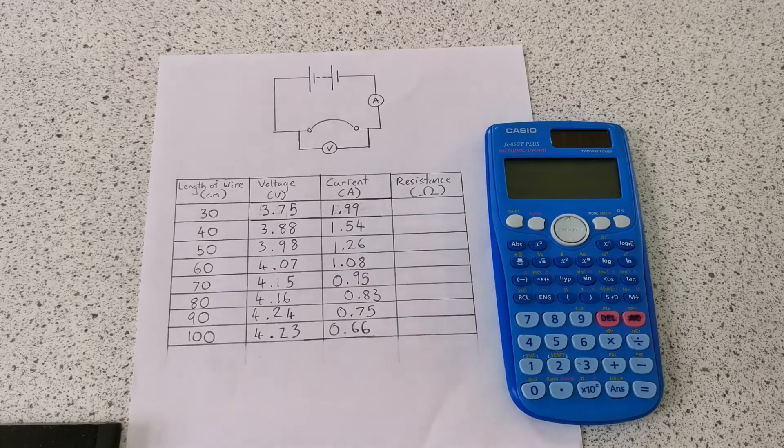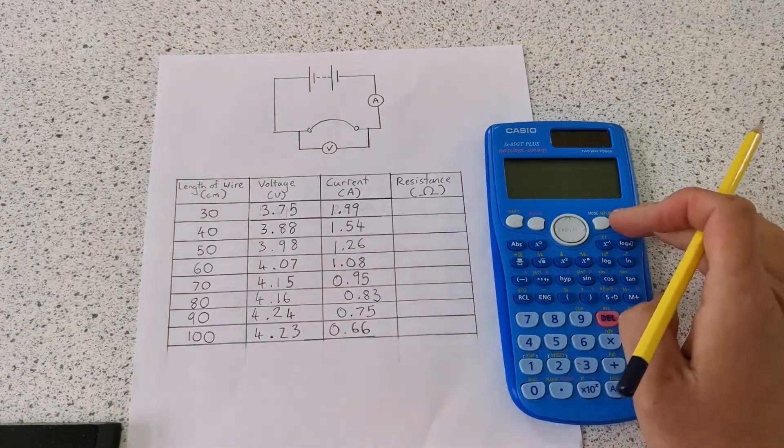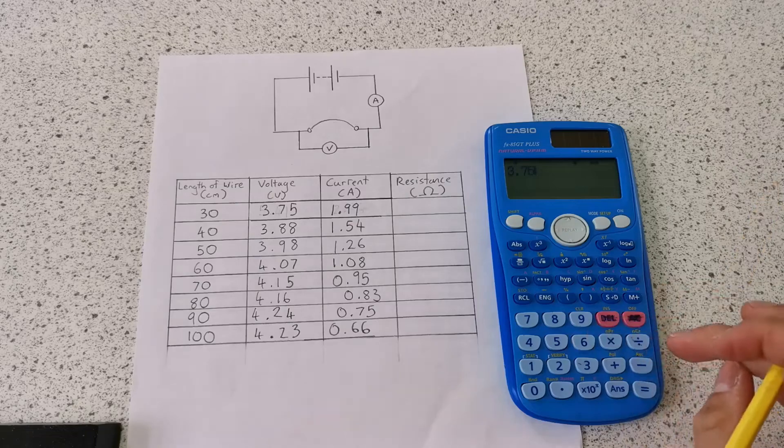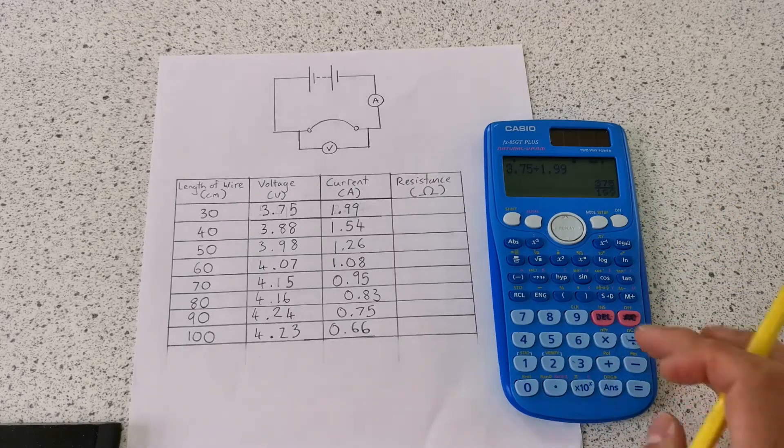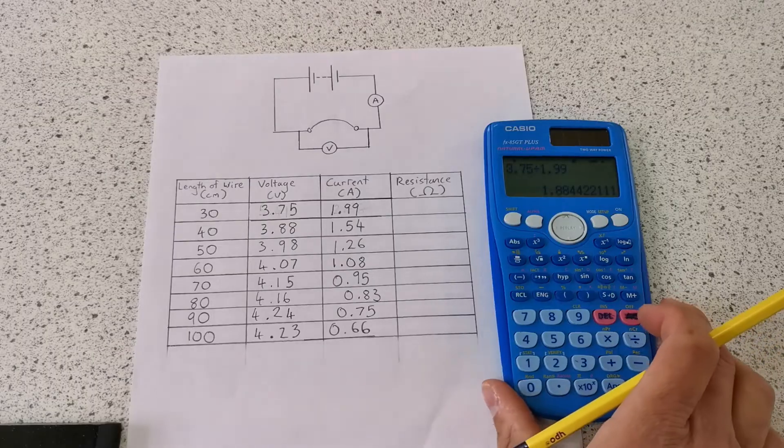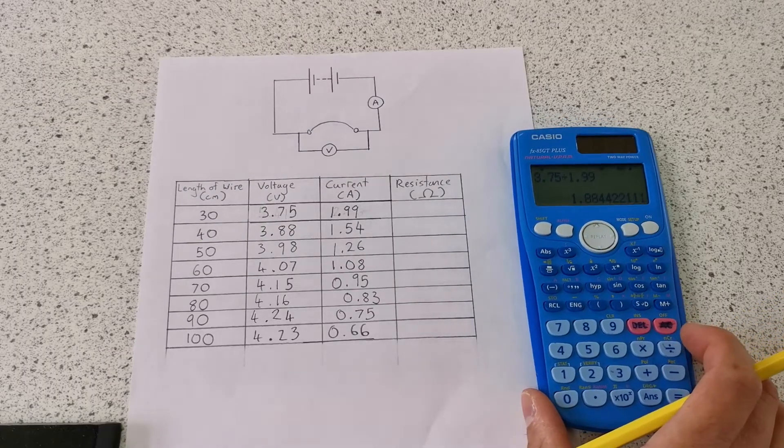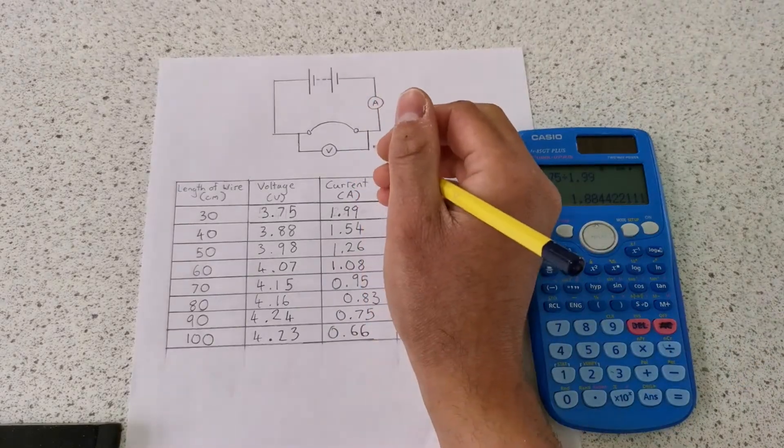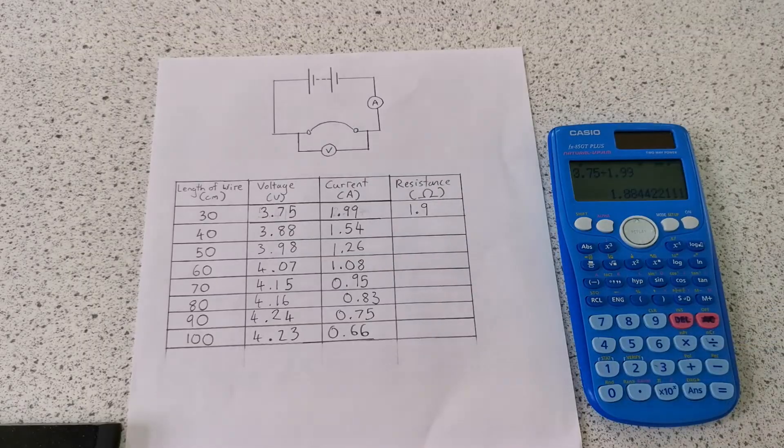Now we're going to calculate the resistance by dividing the voltage by the current. So the first one is 3.75 divided by 1.99, which equals 1.88. I'm only going to take it to one decimal place, so I'm going to use 1.9. Then I'm going to do the same thing for the rest.